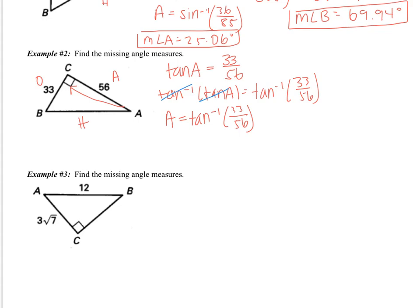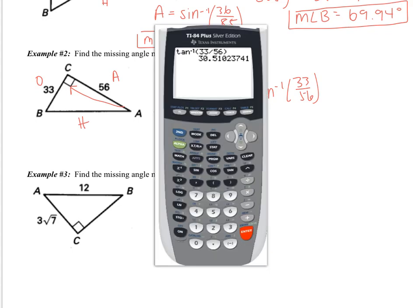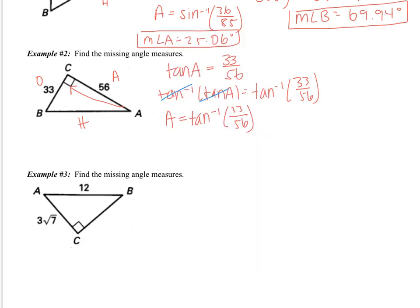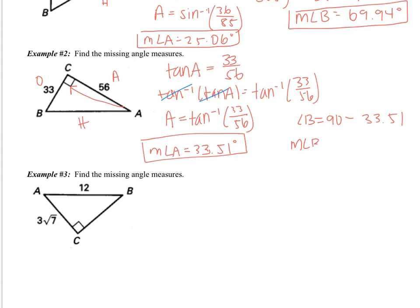That's the vocabulary we use — we say inverse tangent, not tangent negative 1. So at this point we need to go to the calculator. You're going to hit second tangent, which brings up that negative 1, of 33 divided by 56. End your parentheses and hit enter. This tells us that angle A is 33.51 degrees. Then from above, we know that angles A and B are complementary — they add to 90. So angle B is 90 minus 33.51, and I get the measure of angle B to be 56.49 degrees.